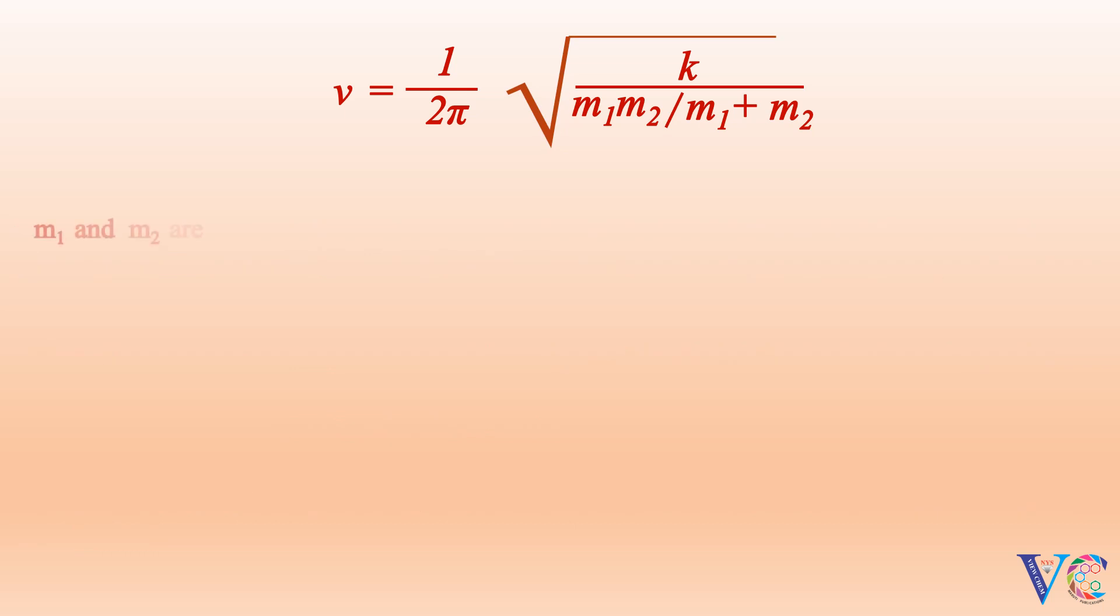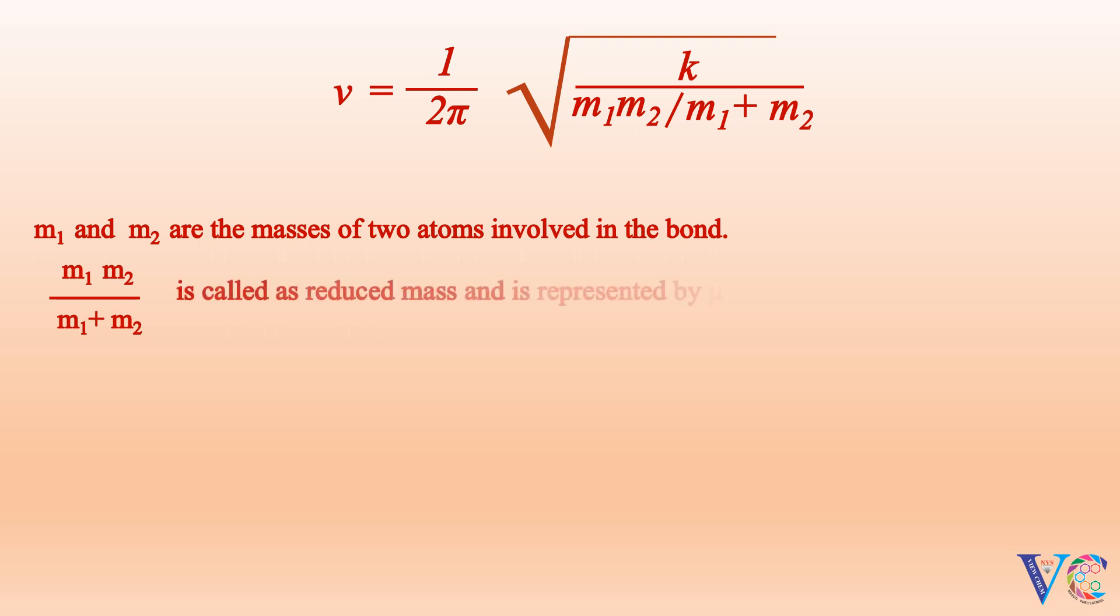M₁ and M₂ are the masses of two atoms involved in the bond. M₁×M₂ divided by M₁+M₂ is called reduced mass and is represented by μ.